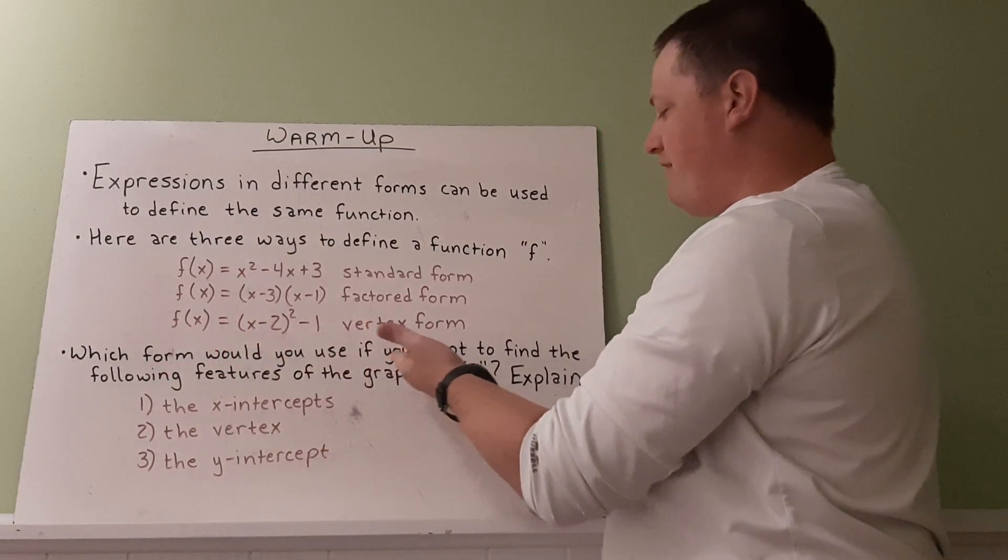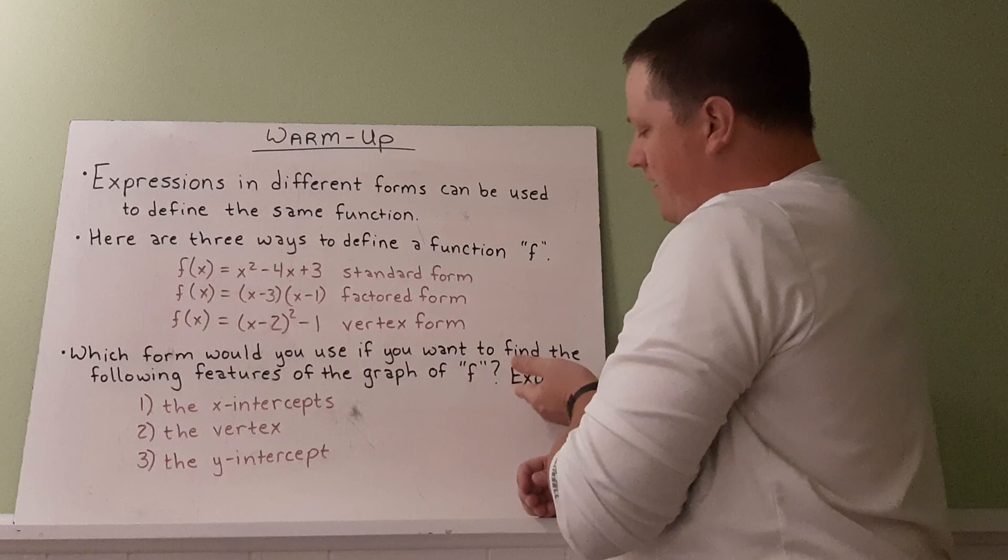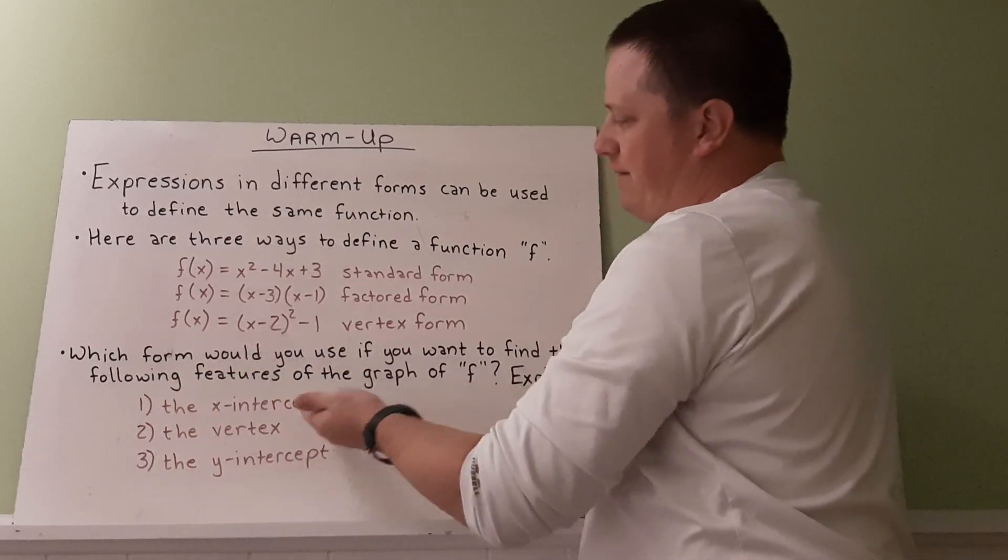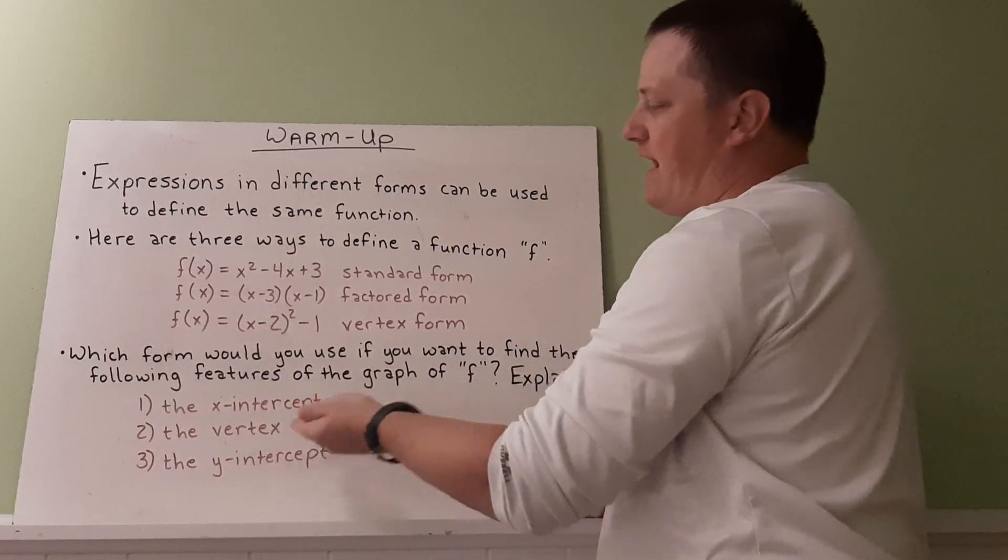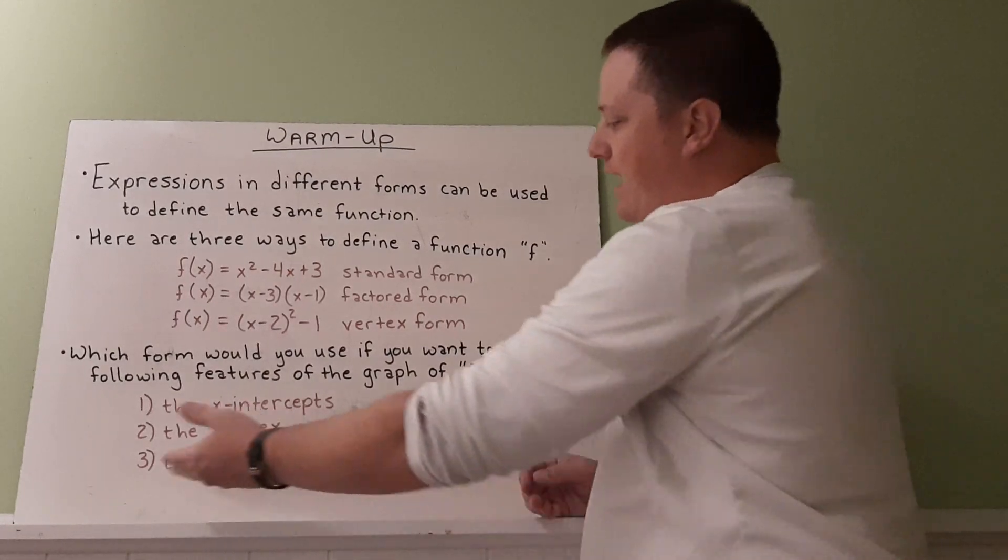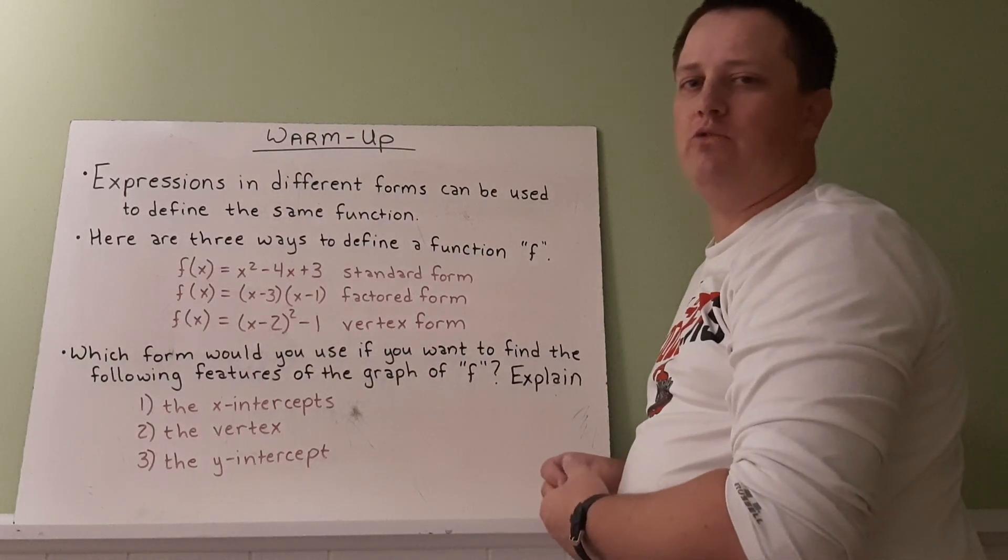Which form would you use if you want to find the following features of the graph of f? Please explain your reasoning. So if you want to find the x-intercepts, which of these three forms would you use, and why? If you want to find the vertex, which of these three forms would you use, and why? And if you want to find the y-intercept, which of these three forms would you use, and why?